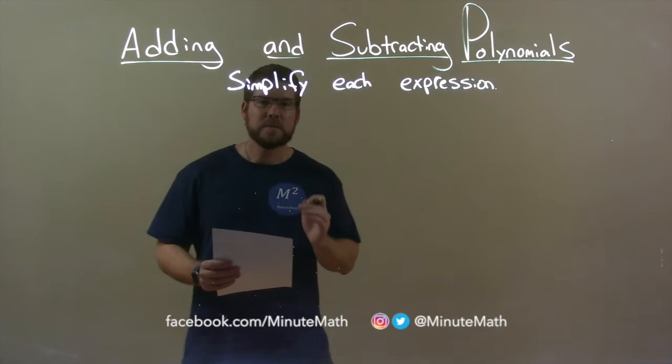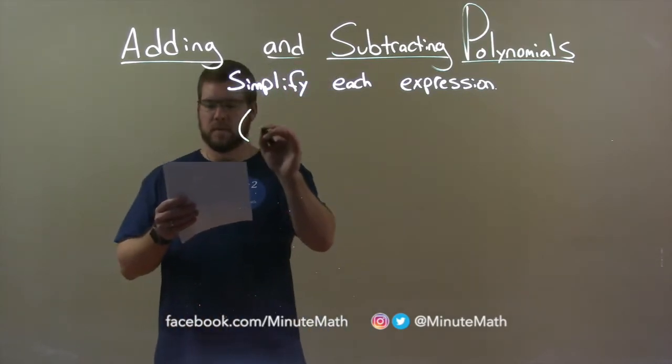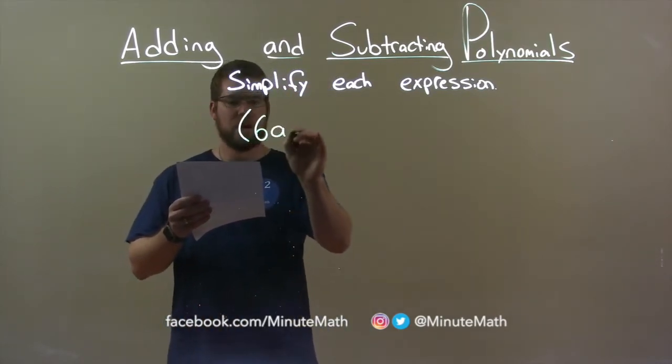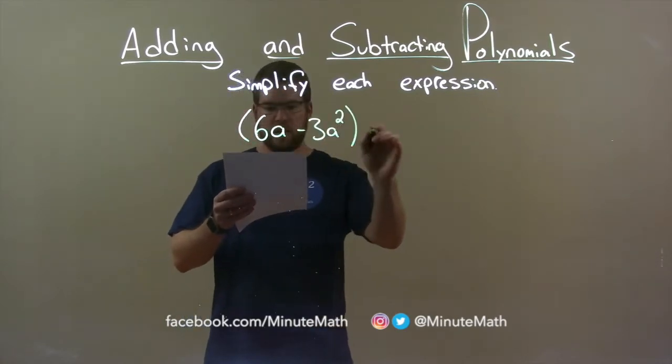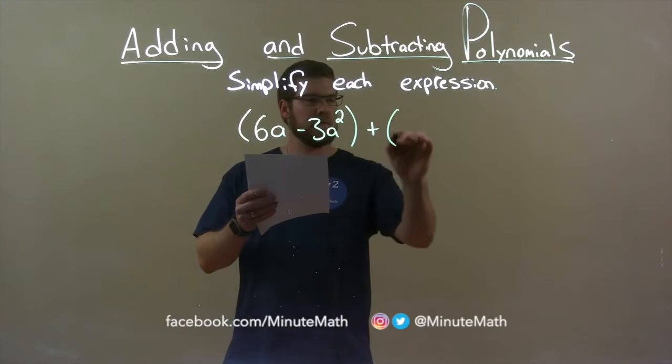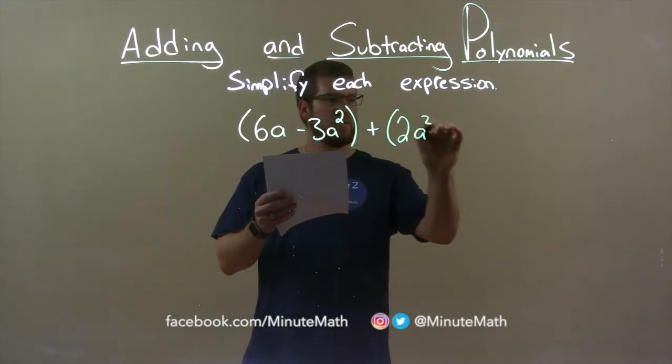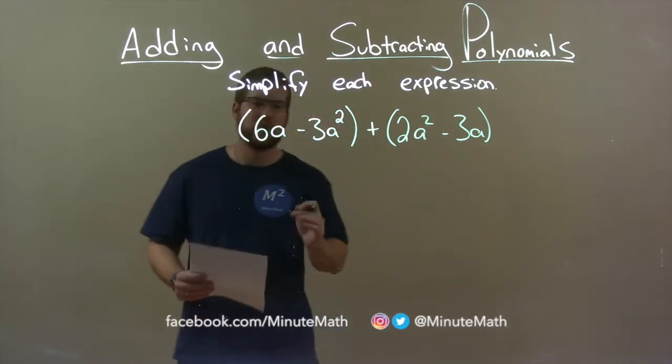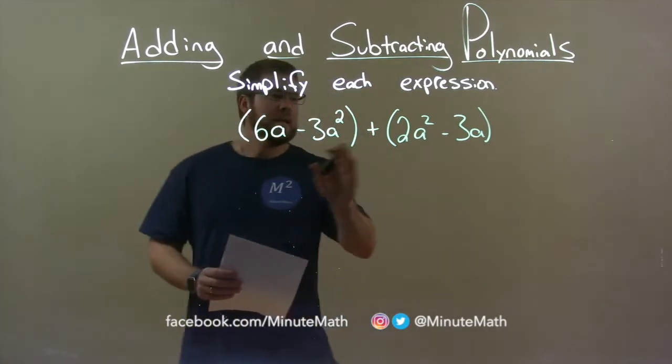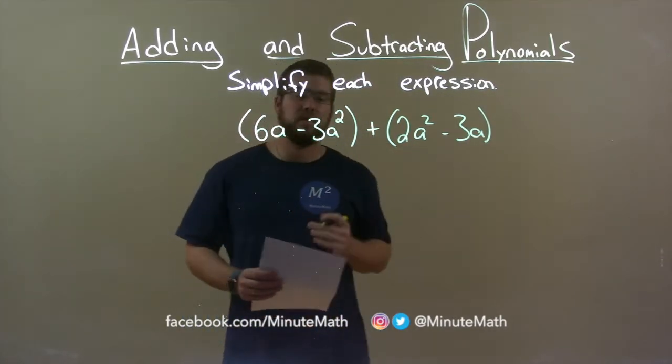So if I was given this expression: 6a minus 3a squared plus 2a squared minus 3a. Well, within each parenthesis I don't see anything that I can simplify.